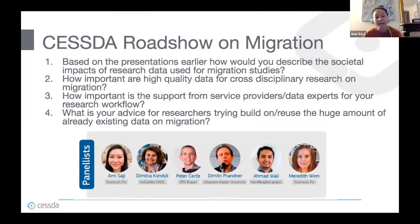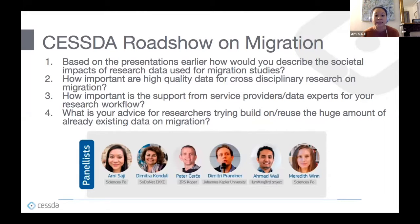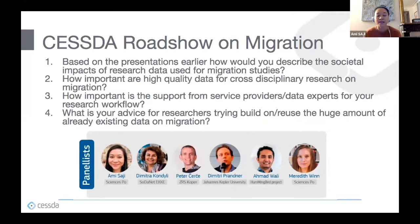They helped ensure we were designing it to be interoperable with other service providers. We made the deliberate decision to map our metadata schema to DDI Codebook, which is the standard recommended for social sciences survey research. They were also instrumental in helping us understand how to apply licenses — both for the tool itself and the metadata — to maximize usability. We ultimately decided to utilize Creative Commons licenses. Finally, they provided guidance on how to draft an appropriate use policy for the registry, leveraging use policies from the CESSDA data catalog and CESSDA service providers.